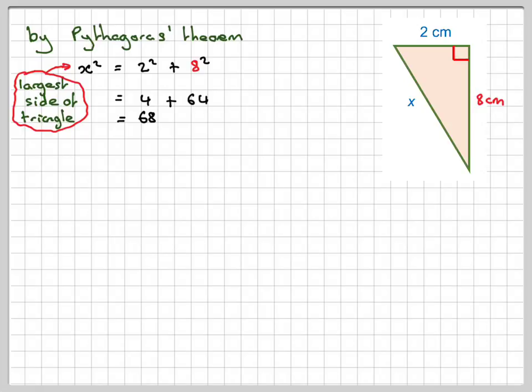To find X, we've got to take the square root of 68, and you calculate it, it gives you 8.2462 centimeters.